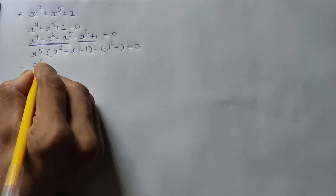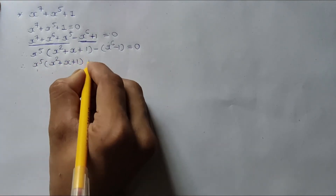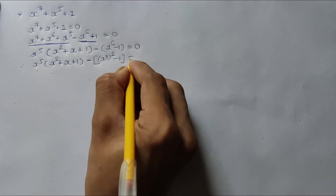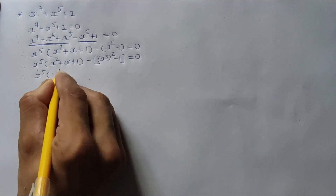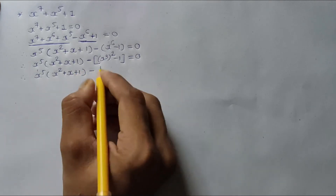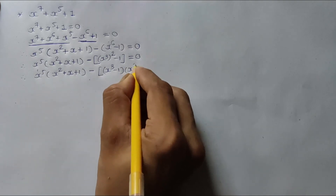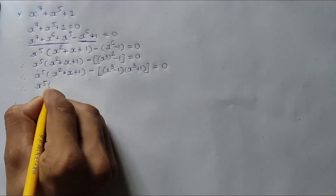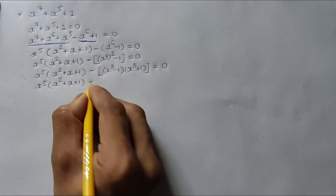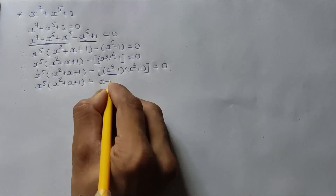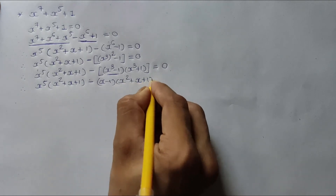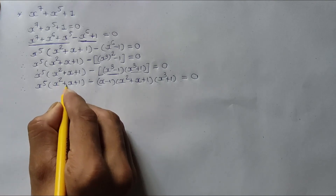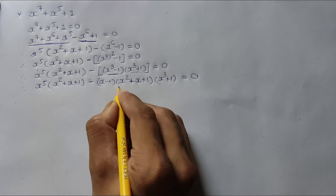Now x raise to 5 times x square plus x plus 1, minus x raise to 6 minus 1, which becomes x cube minus 1 times x cube plus 1, equal to 0. Here x square plus x plus 1 is common, so take it as common factor.